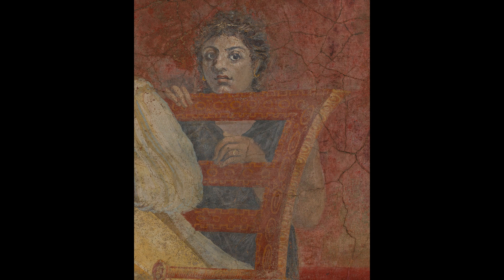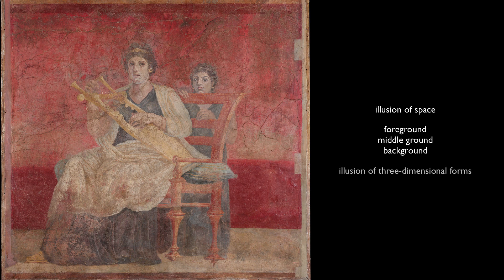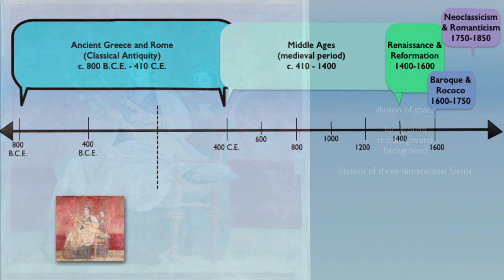The child behind the chair signals that there is space — a relatively shallow space with a wall behind the child. We see the woman in front, the chair in the middle, the girl behind that, and the wall behind her. We have an illusion of space and an illusion of three-dimensional figures that exist within that space.